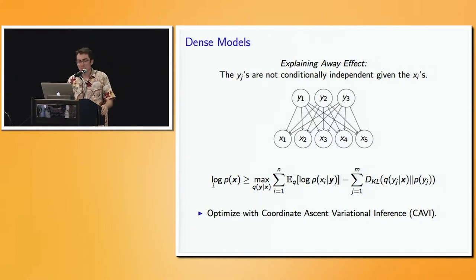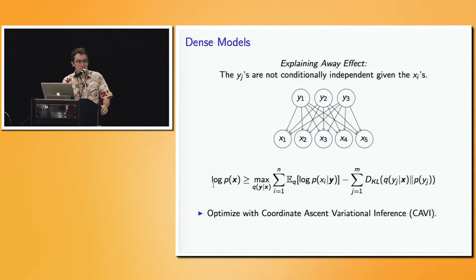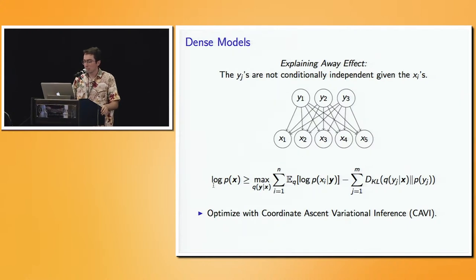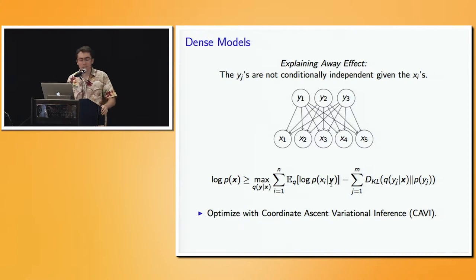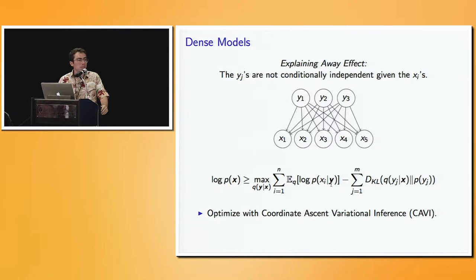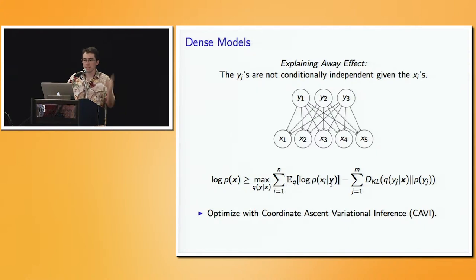You may also know about the explaining away effect — it's what makes inference in graphical models difficult. It says that the latent variables start out independent, but conditioned on the observation, they are no longer conditionally independent. We usually have to optimize this ELBO with something like coordinate ascent, which is like Gauss-Seidel from linear algebra: hold all the latent variables constant except for one, update that one, and iterate. That's called coordinate ascent variational inference.